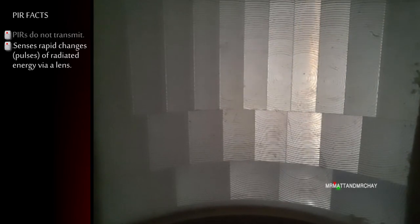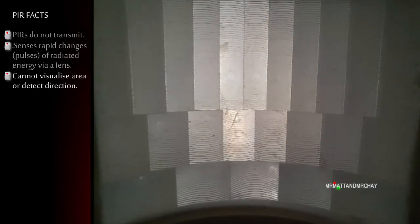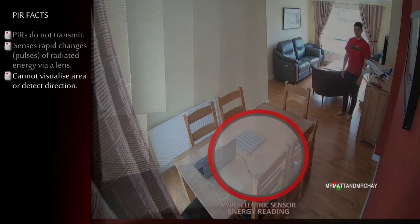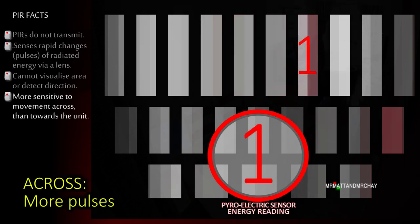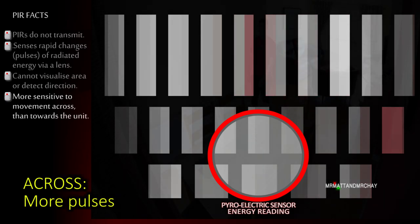A PIR is not a camera. It cannot visualize the room. It also cannot detect where the motion occurred or the direction of it. A PIR is more sensitive to you walking across its detection pattern rather than towards it.